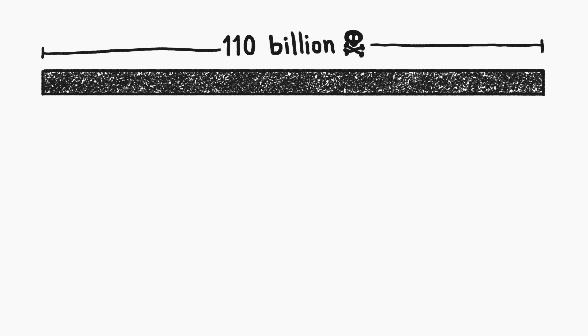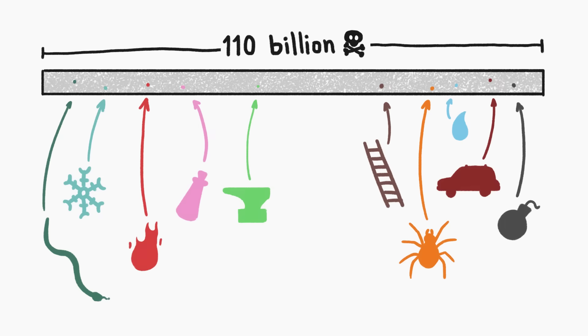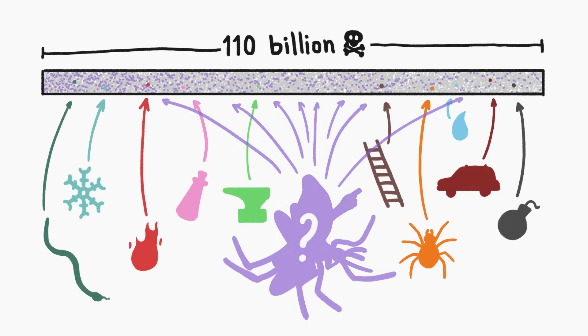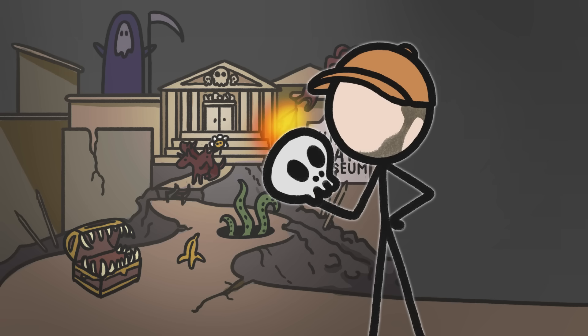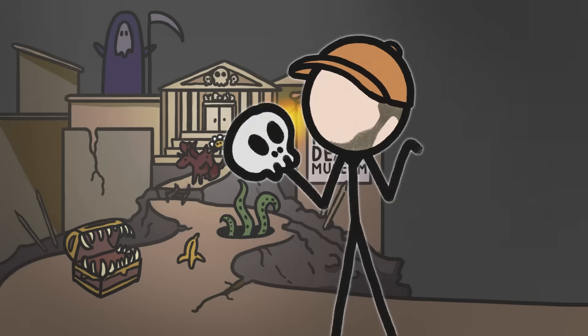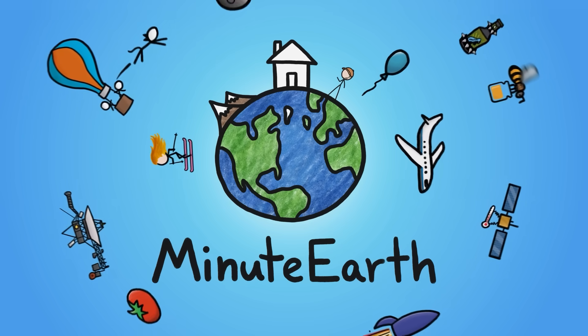About 110 billion people have died throughout human history for millions of different reasons. Some things, though, have killed a lot more people than others, so we're going to take a historical tour of human death and highlight how the common causes of death changed over time. Or didn't. Hi, I'm David, and this is MinuteEarth.